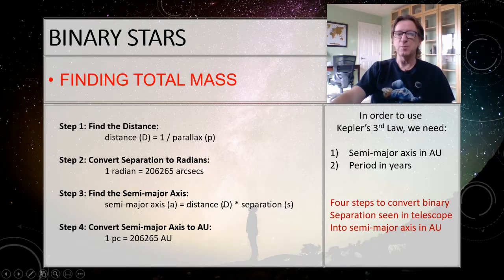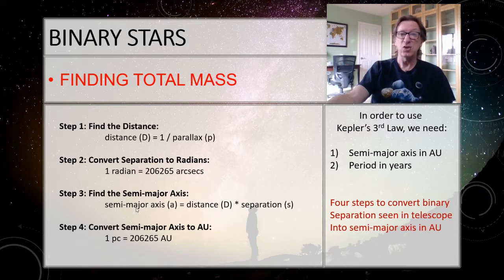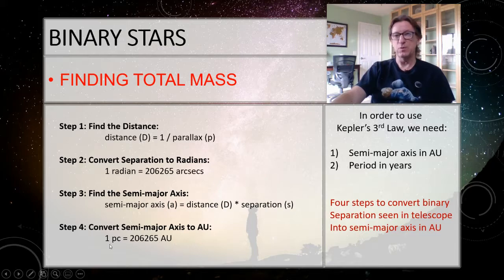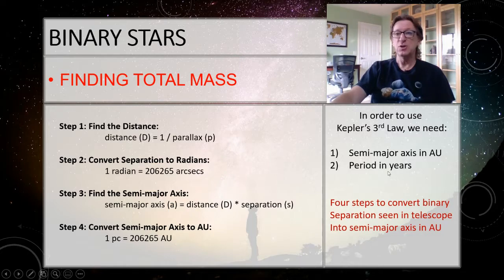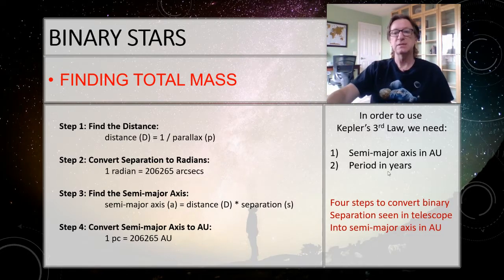Once I've converted to radians, I multiply by the distance to get the separation in parsecs, then convert that to AU because Kepler's third law needs AU. I also need the orbital period in years — we'll normally read it off in days from the light curve, then convert by dividing by 365.